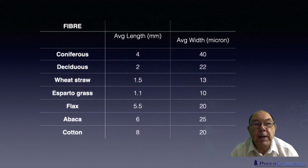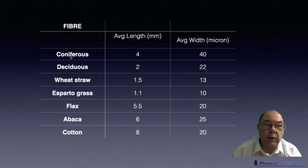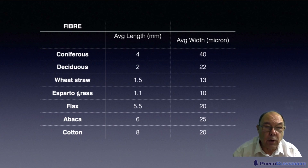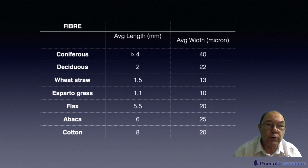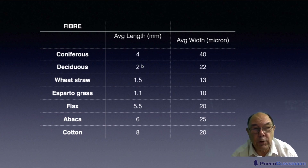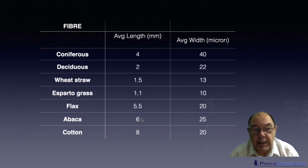Just to finish off with a couple of tables. Here are various plant sources: coniferous trees (the softwoods), deciduous trees (the hardwoods), and a range of non-wood fibres — wheat straw, esparto grass, flax, abaca and cotton — and their average fibre lengths. Softwoods are around 4 millimetres, hardwoods around 2 millimetres. Esparto is well known as the shortest at 1.1 millimetres. Abaca averages 6 millimetres but can actually be anywhere up to 12 millimetres.